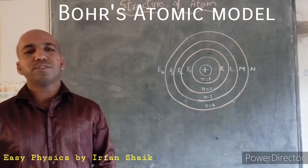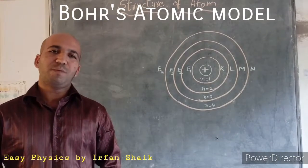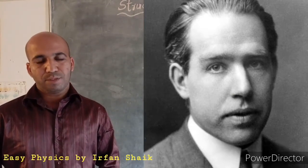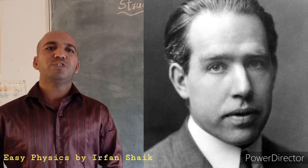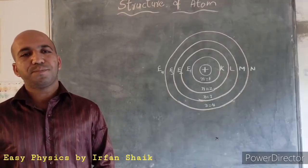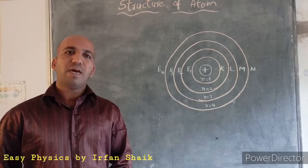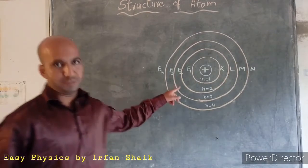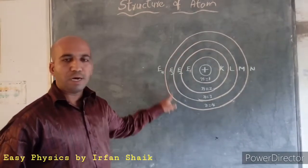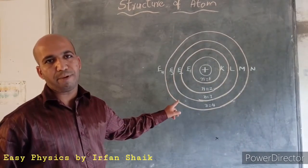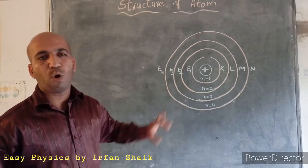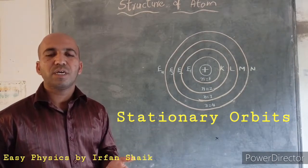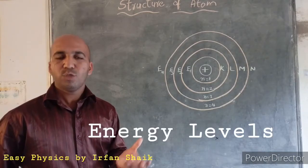After the Rutherford atomic model, a new atomic model was proposed by Niels Bohr. According to Bohr's postulates regarding the structure of an atom, electrons are revolving around the nucleus in circular paths. These circular paths are called stationary orbits, and can also be called energy levels.